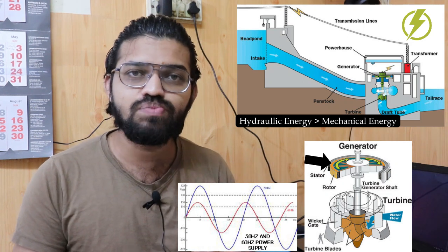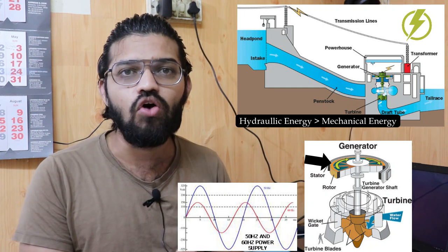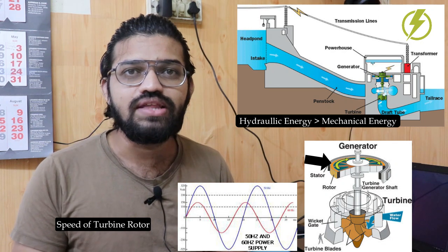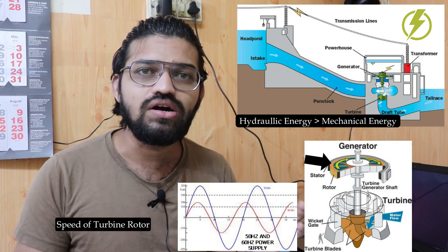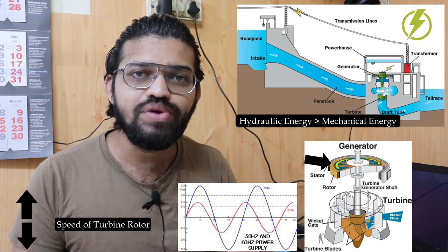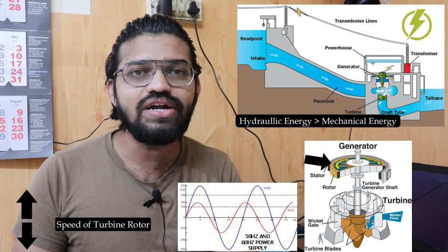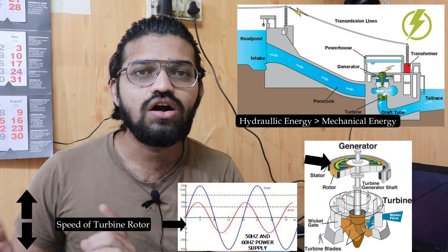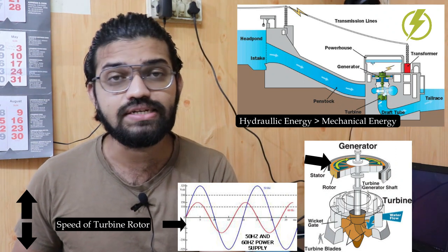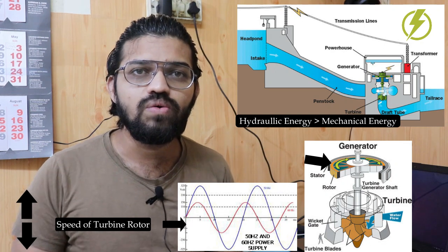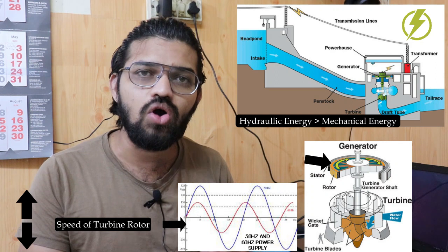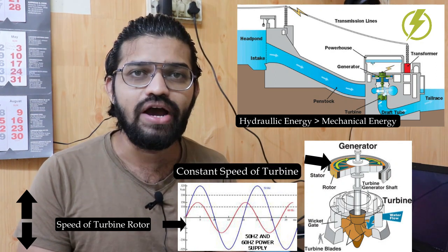The frequency of the electric current produced by the generator purely depends upon the speed of the generator and the speed of the turbine rotor. If there is any deviation — an increase or decrease — in the speed of the turbine, it will ultimately affect the current output and the frequency of the electricity. It is therefore very necessary to maintain a constant speed of the turbine.